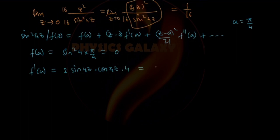So f(π/4) = sin²(π) = 0. The derivative f'(z) = 2 sin(4z) cos(4z) · 4 = 4 sin(8z), which equals zero at π/4 because sin(2π) = 0. Similarly, the double derivative is f''(z) = 32 cos(8z), which equals 32 at π/4. The third derivative will also be zero.